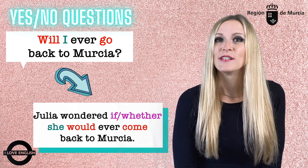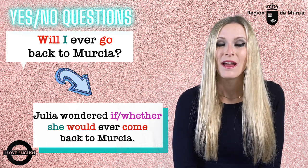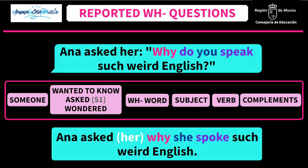Let's now move on to WH questions. The structure is: somebody asked someone — again with or without the object — WH word, and then subject, verb and complement.